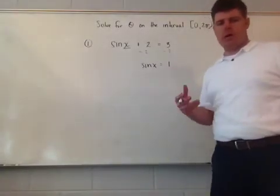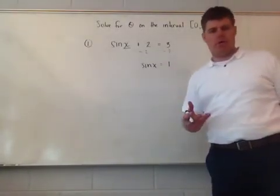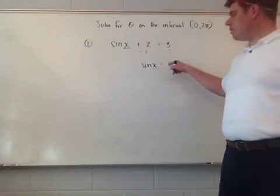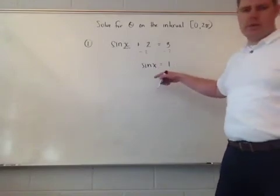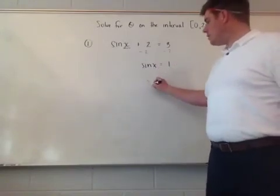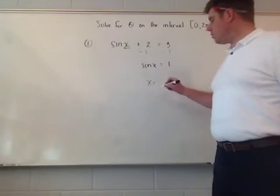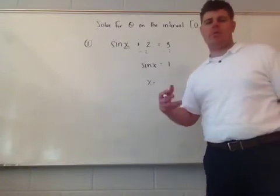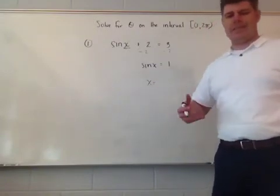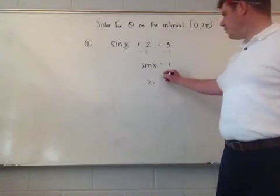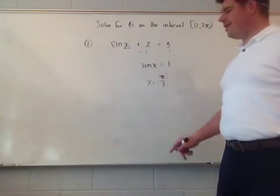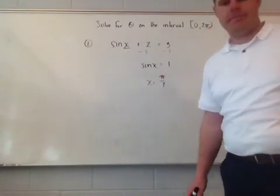By this point I would hope you have those memorized. The angle whose sine gives you 1 is 90 degrees. So x is equal to 90 degrees, but remember we're talking about radians — and 90 degrees in radians is π over 2. And that's how you would complete that type of problem.